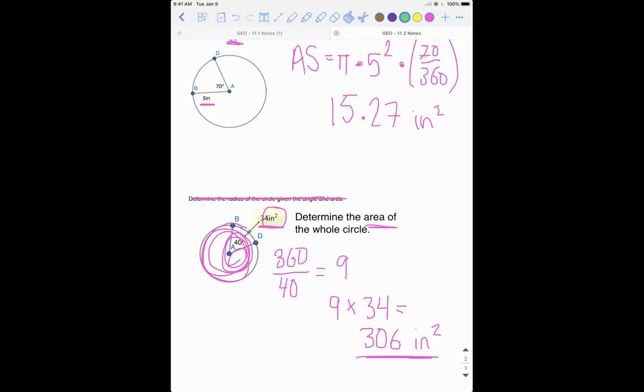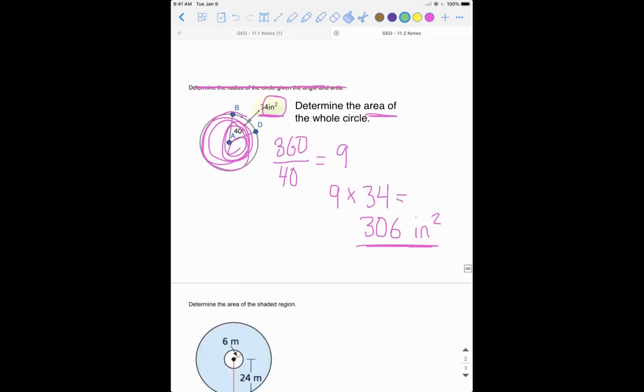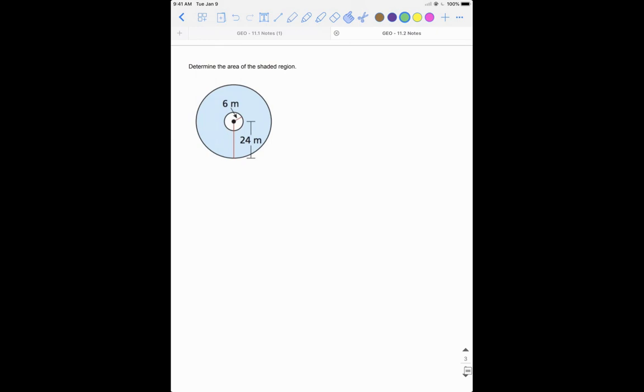So this is just another application of using area of a sector. We're going to look at one more area problem, kind of a challenge problem, but you're just using a couple different tools that we already used. It says determine the area of the shaded region. Our shaded region is this blue region, and we want to determine just that. Basically think about determining the area of a donut.